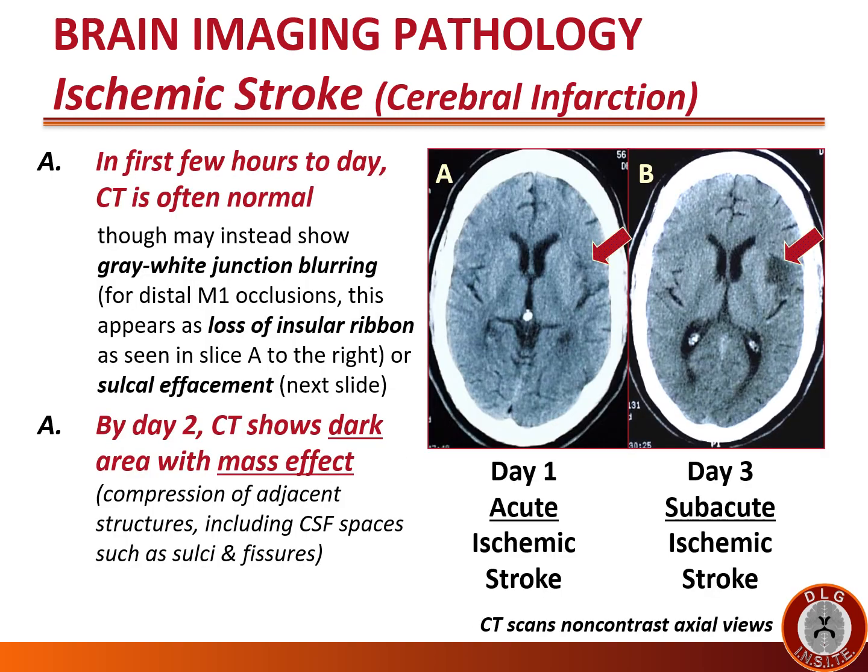Now let's look at the appearance of ischemic stroke or cerebral infarction on CT scan. In the first few hours to a day of ischemic stroke, the CT is often normal, though it may show gray-white junction blurring or sulcal effacement. For distal M1 occlusions, gray-white junction blurring appears as loss of insular ribbon. By day two, CT will show a dark area with mass effect and compression of adjacent CSF spaces such as sulci and fissures. This is how one differentiates a subacute infarction from a chronic one — in the subacute phase there will be local mass effect and compression of sulci, whereas in a chronic infarction the adjacent sulci will be bigger and wider due to atrophy.